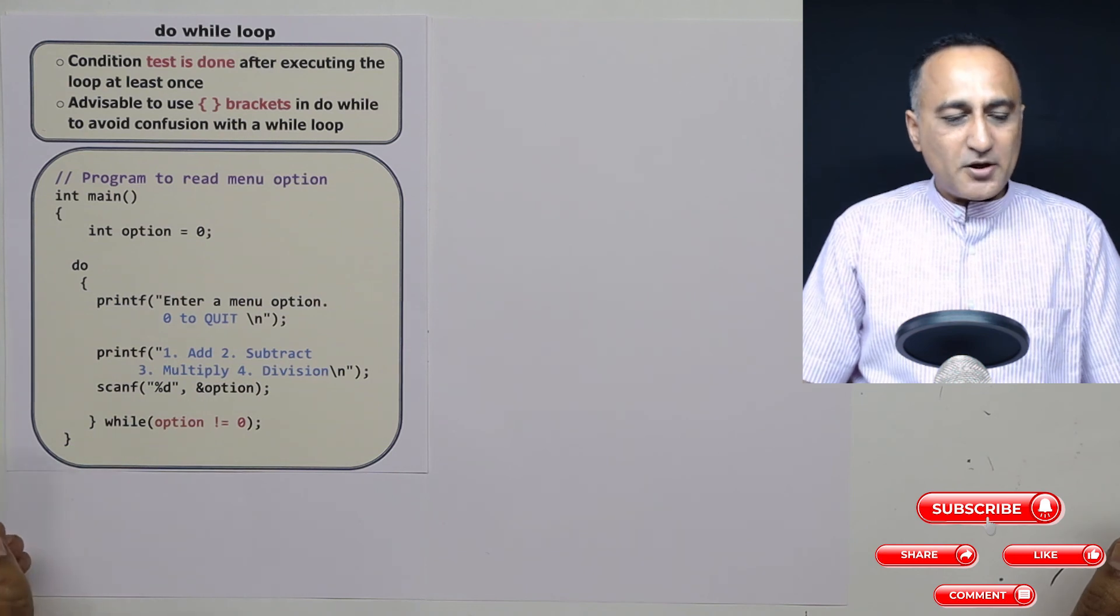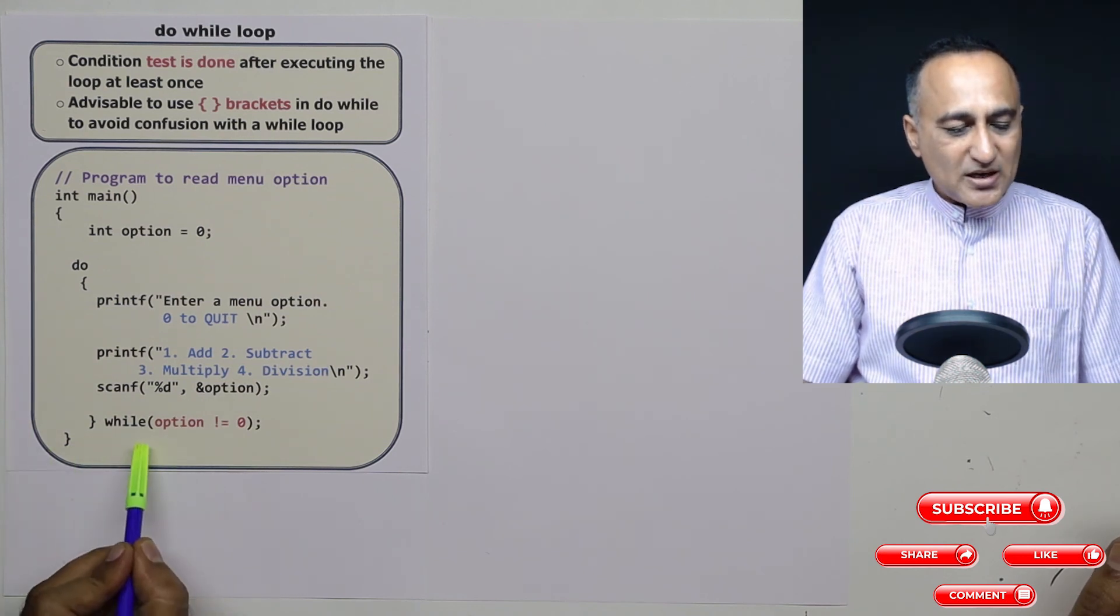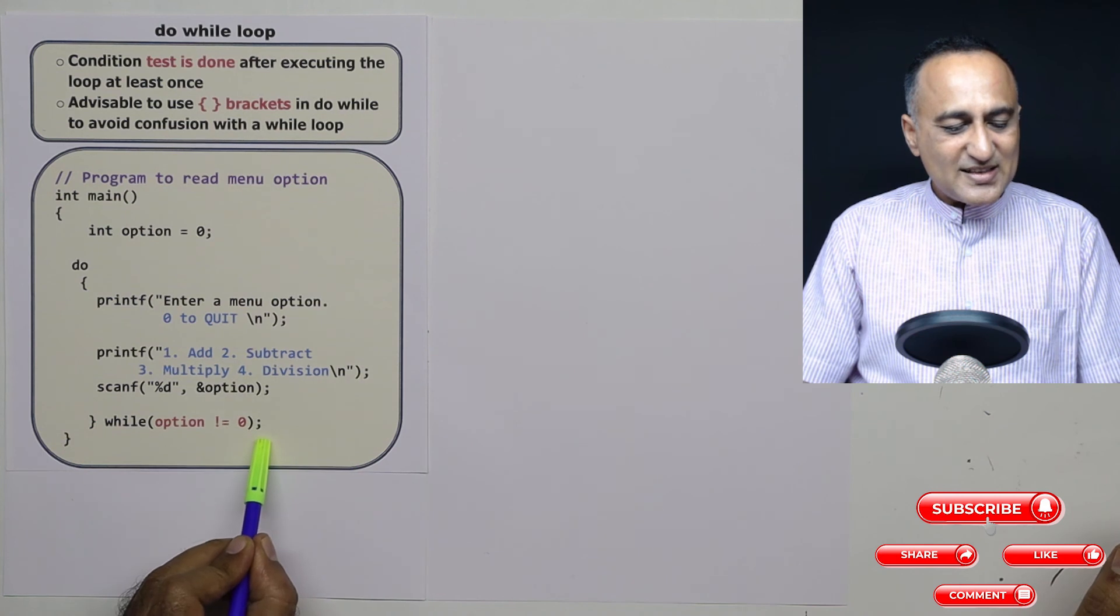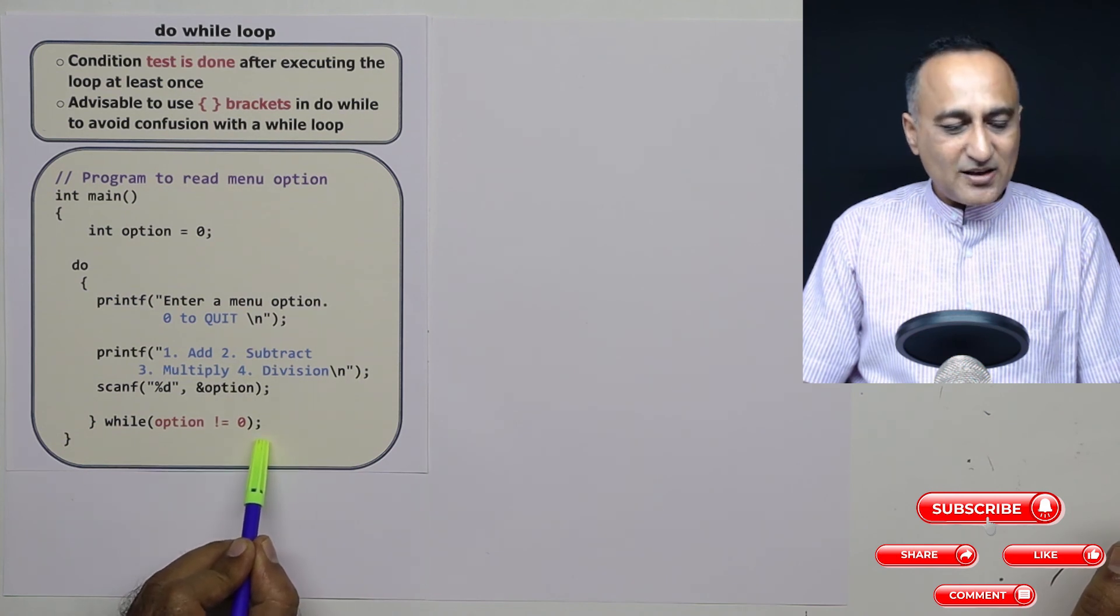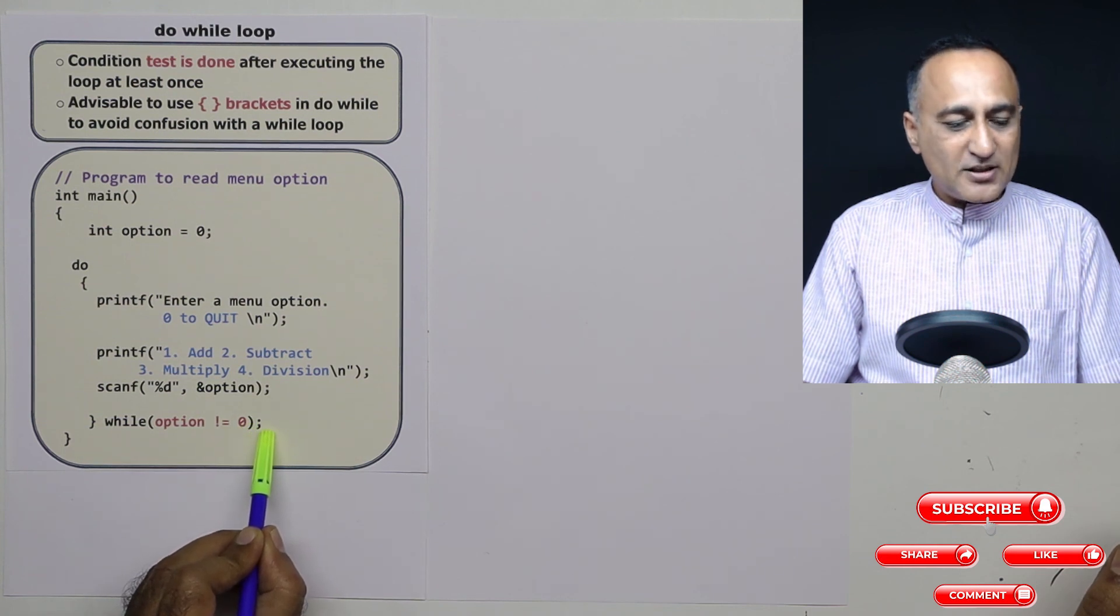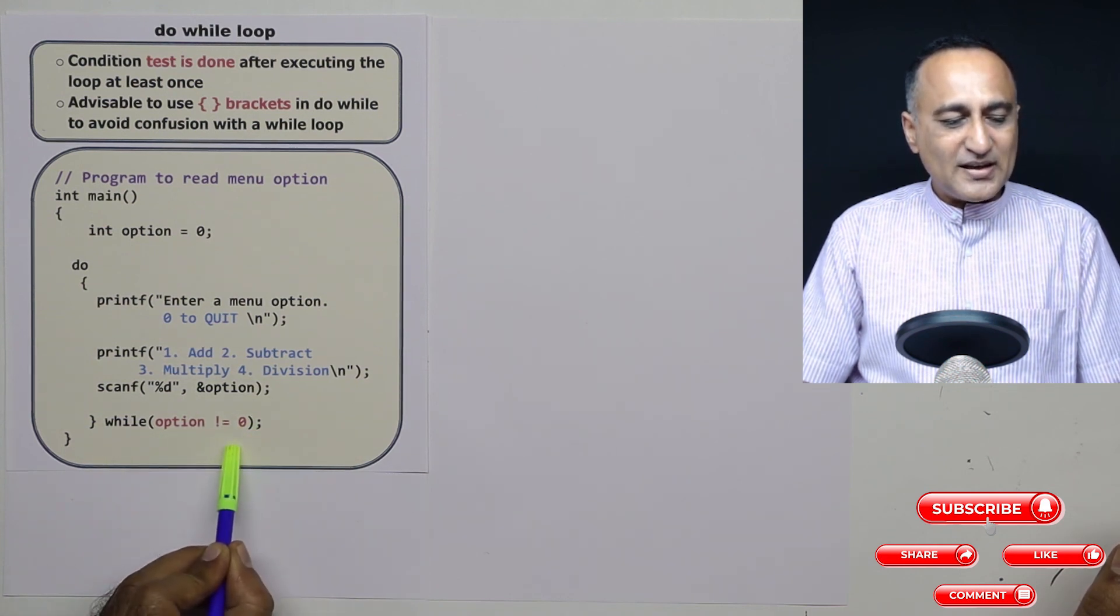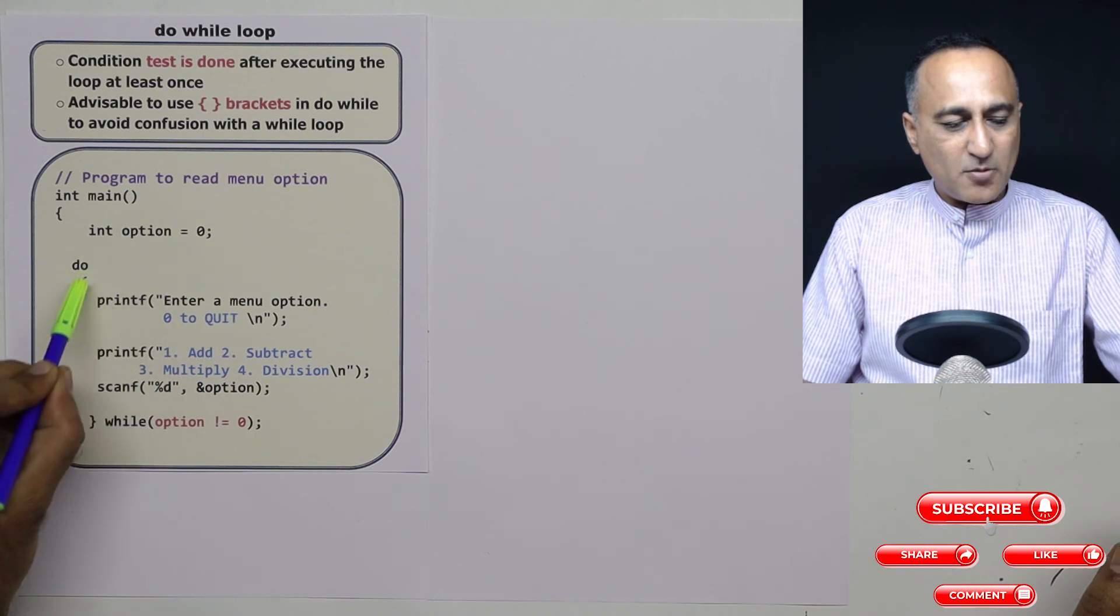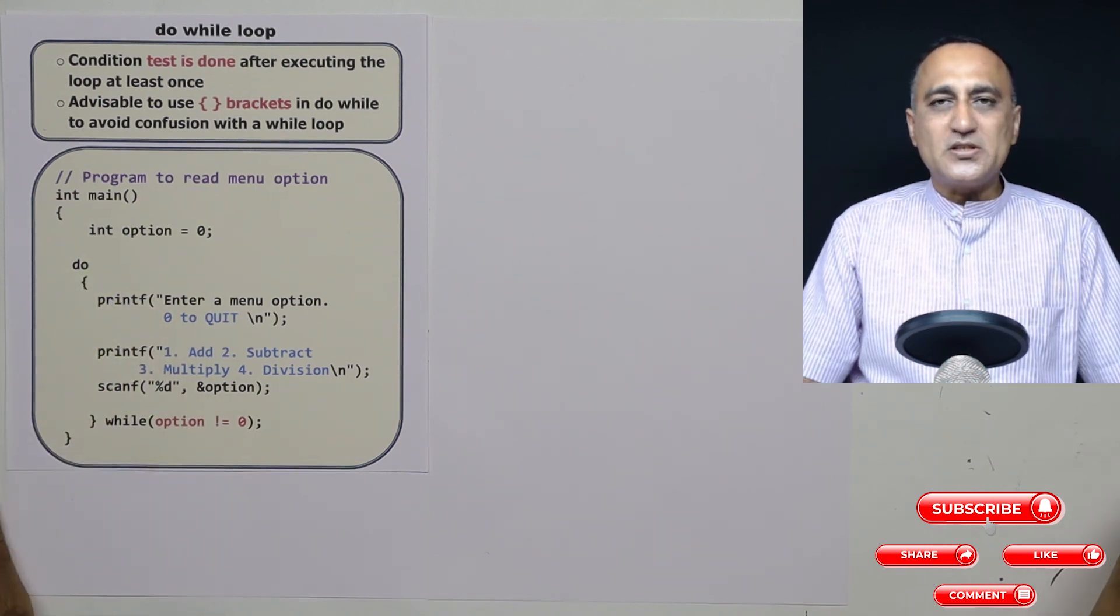An important point with the do while loop is after the condition is tested, there is a semicolon, unlike the while or the for loop. So please do not forget to put the semicolon in the do while loop after the testing of the condition. This should give you an idea about how a do while loop is used.